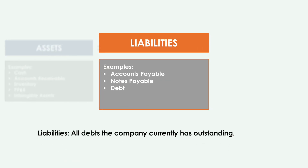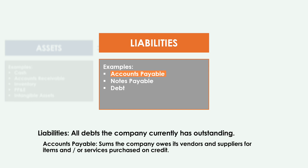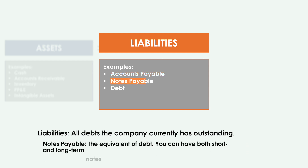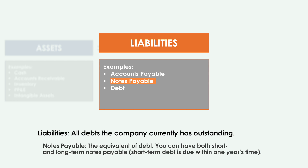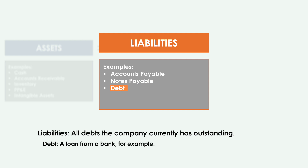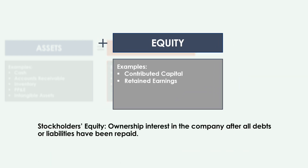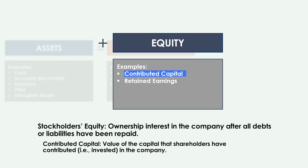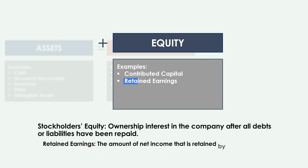Next, we'll move on to liabilities, which are all debts the company currently has outstanding. First, you have accounts payable — sums the company owes its vendors and suppliers for items and/or services purchased on credit. Next, notes payable, which is the equivalent of debt. You can have both short and long-term notes payable; short-term debt is due within one year's time. And finally, debt, like a loan from a bank. The last category is stockholders' equity — the ownership interest in the company after all debts and liabilities have been repaid. Here we have two definitions: contributed capital, which is the value of the capital that shareholders have invested in the company, and retained earnings, the amount of net income that is retained by the business.